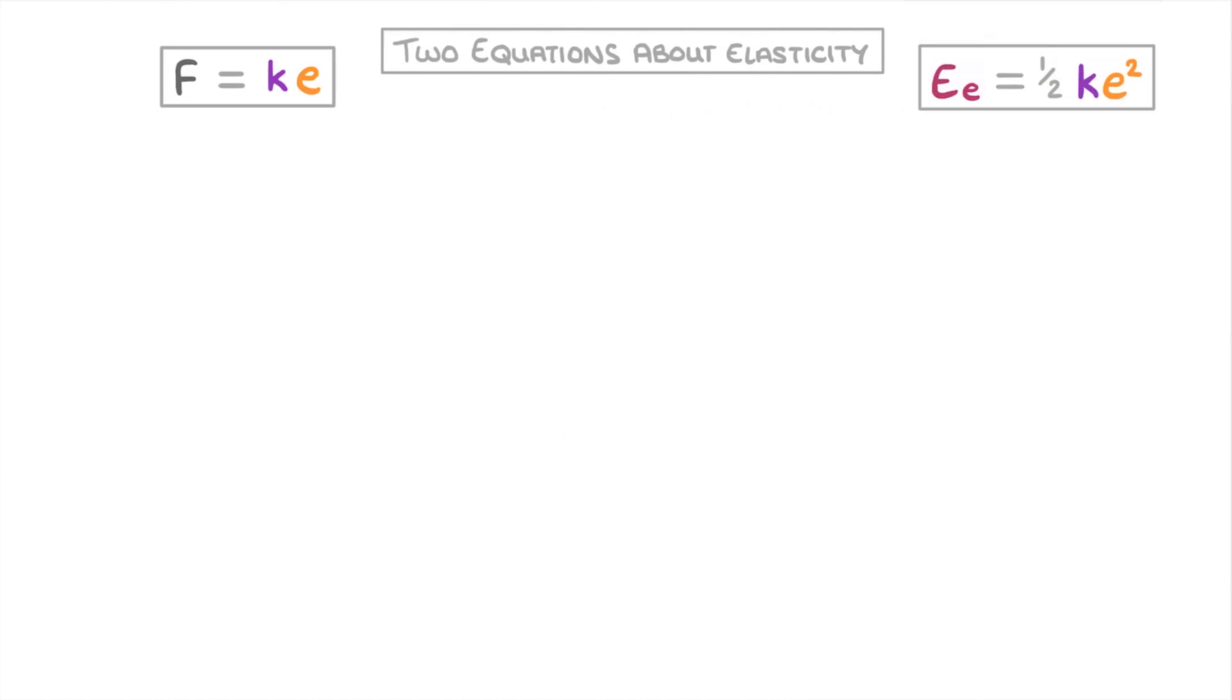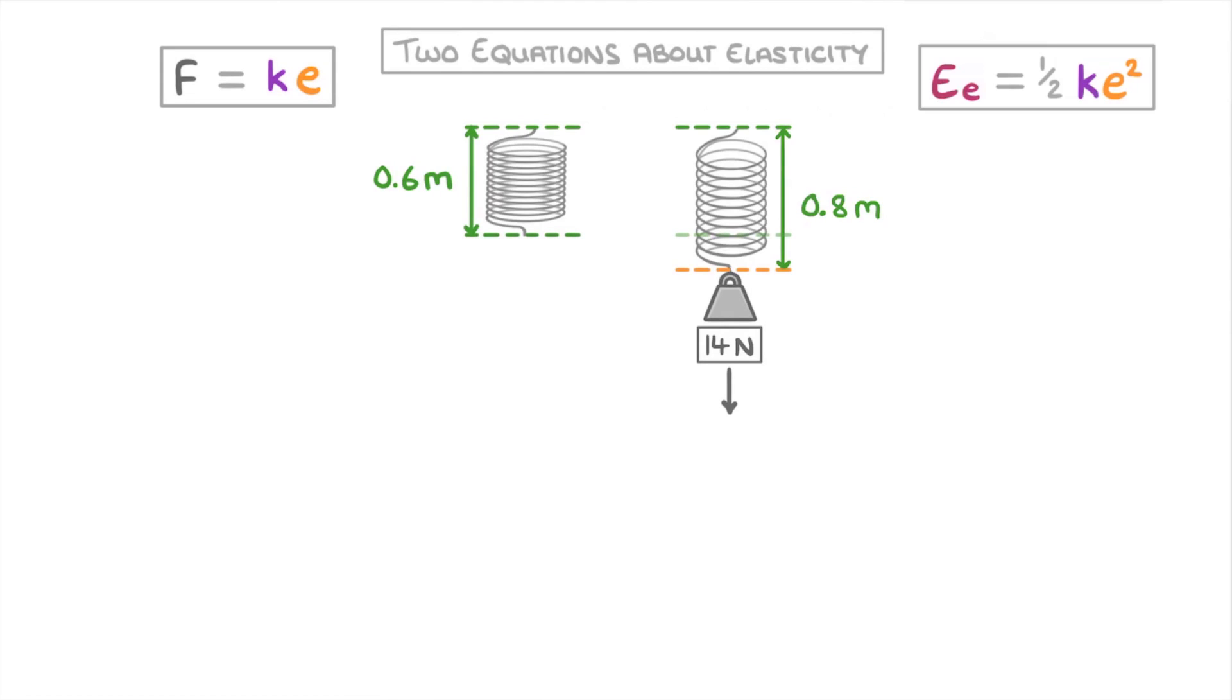To see how these equations work, let's try a couple of examples. Imagine this spring has a natural length of 0.6 meters, but when we apply a force of 14 newtons, it stretches to 0.8 meters. What's the spring constant of the spring?